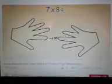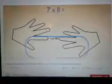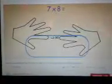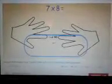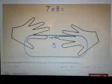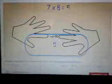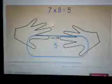Now we'll count the numbers of fingers that are below the two fingers which are touching. We have two fingers on the left hand and three fingers on the right hand, which is a total of five fingers. This becomes the tens digit of our answer.